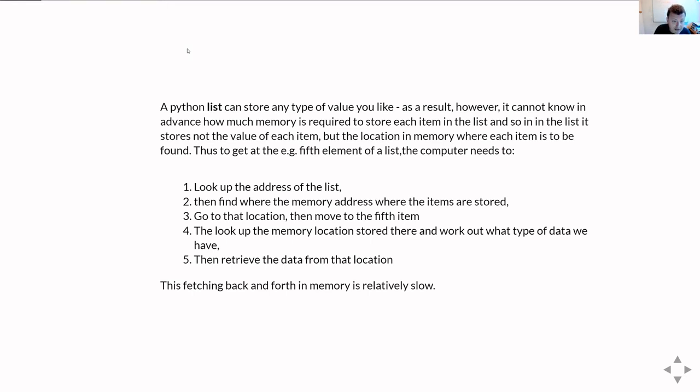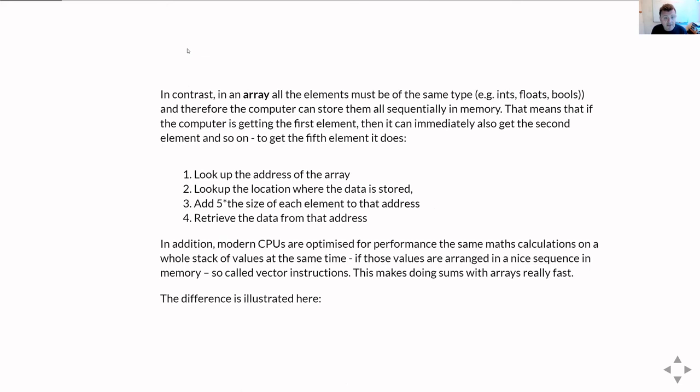The contrast is with an array. Now an array is a sequence where we know in advance that all the elements have the same data type, and that means that we know how big each data element has to be, and therefore rather than storing a sequence of addresses where we're going to go and find where to look up the information, we can just store the information we're interested in, and that makes it an awful lot simpler to go and access the data we're interested in.